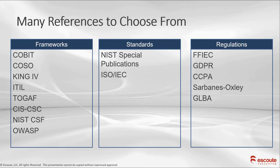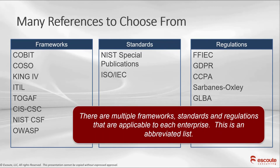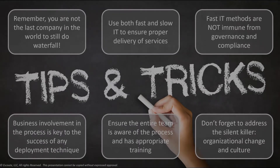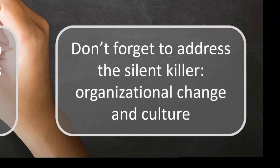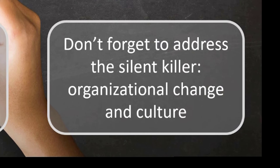You have many references to choose from — frameworks, standards, regulations, as we mentioned before. This is just a short list. On the framework side, you have COBIT, one of my personal favorites; COSO, the Committee of Sponsoring Organizations; and King4 out of South Africa. Finally, don't forget to address what I think is the number one silent killer here: organizational change and culture — a subject of another upcoming video.